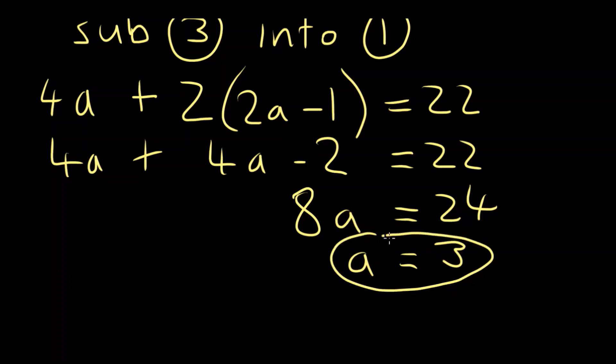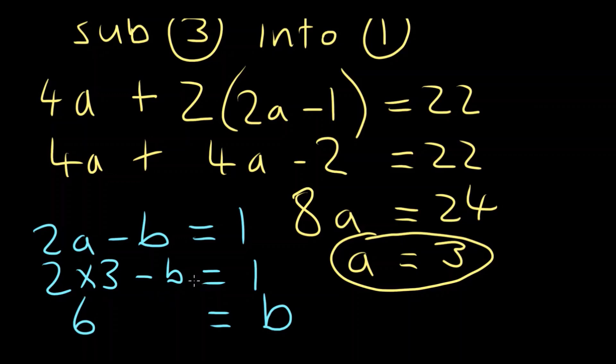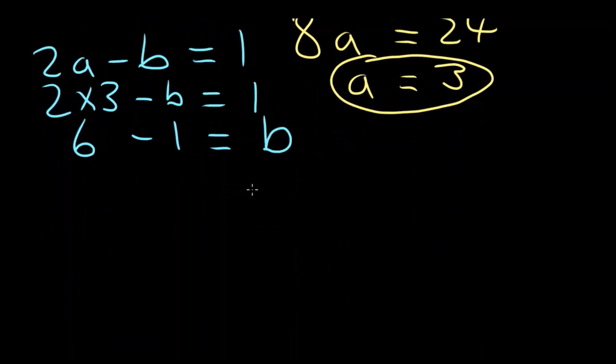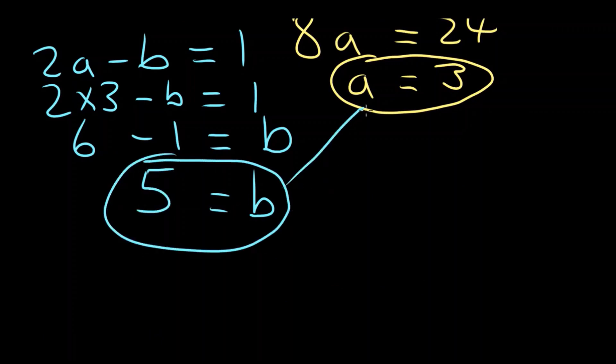Okay, that's one of our answers. And then all we have to do is substitute that a into one of our other equations. So let's choose the simpler one. 2a minus b equals 1. Substitute our new a value. So 2 times 3 minus b equals 1. So 6 minus 1 equals b. b will equal 5. And there's our answers. a equals 3 and b equals 5.